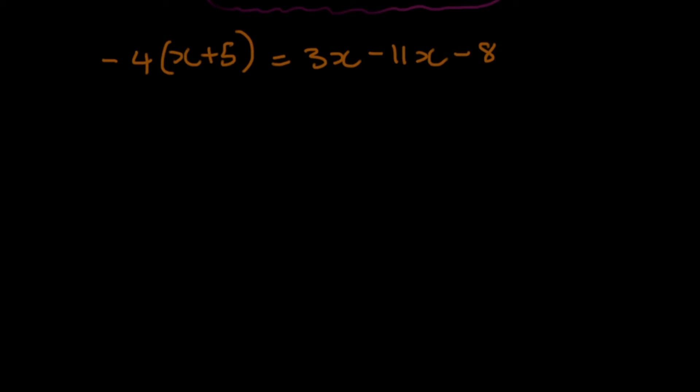The first thing you're going to do, you're going to expand the bracket. What is minus 4 times x? That's going to be minus 4x. Then, what is minus 4 times positive 5? That's minus 20. And then, that is equal to 3x minus 11x minus 8.